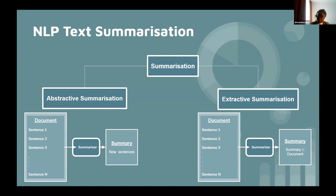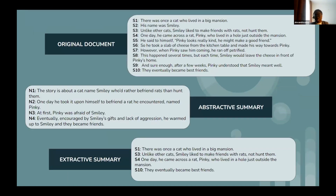You can see this in the example here: a small story as the original document. The abstractive summary consists of new sentences rephrasing what happened in the original. The extractive summary is a subset — sentence one, sentence three, sentence four, sentence ten from the original — forming the extractive summary.